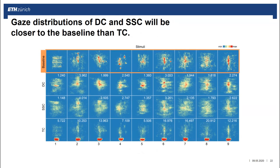If we look at the heat maps, this becomes more obvious. In the top row you can see the gaze distribution of the baseline; the bottom row shows the distribution for traditional captions. As you can see, the distributions for direct and salient-sensitive captions look much more similar to natural viewing behavior of the baseline.